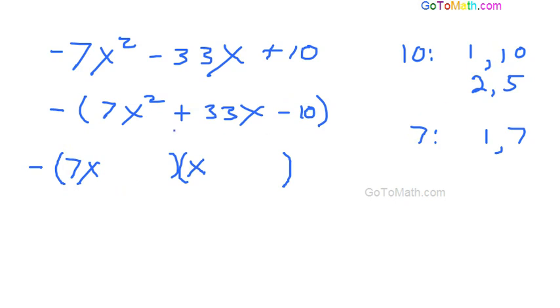So what do we got? We could put a 10 here and a 1 here. Now remember, this is a minus sign here. So one of these guys is going to have to be negative. But remember, we got a positive 33 here. And let's just look at this. We have 7 times 1 is 7. And no, that's not going to work. That is not going to work.